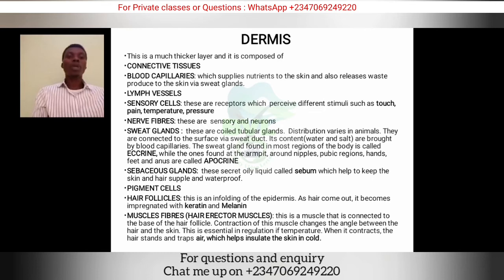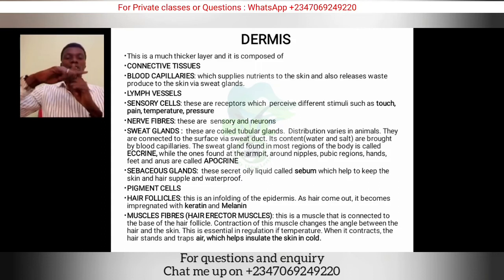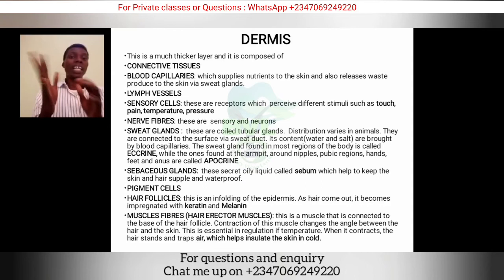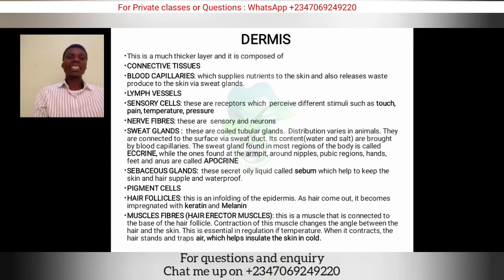When hair is originally growing from the skin it is white in color, but as it grows out melanin is added, making it black or dark. That is why at old age our hair tends to become whitish or gray — because the level of melanin reduces with age. The dermis also contains the erector pili muscle — a muscle connected to the base of the hair follicle. When this muscle contracts, it changes the angle between the hair and the skin, causing the hair to stand up. This traps air, which insulates the skin in cold conditions and also causes goose pimples.